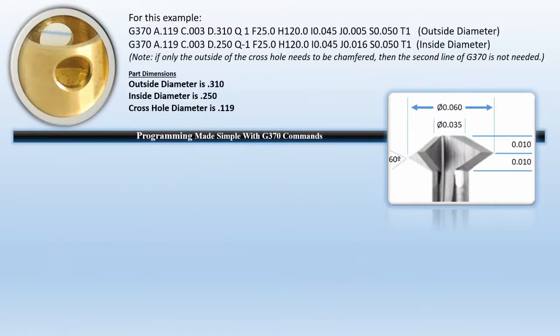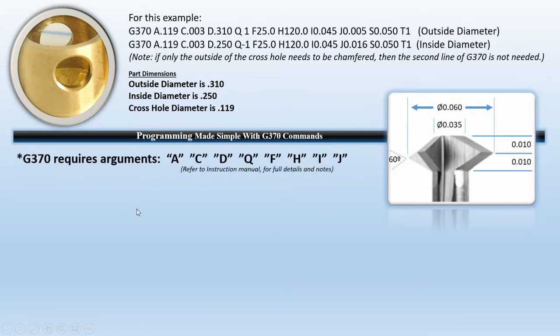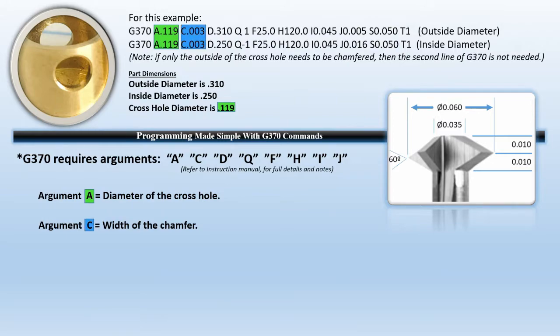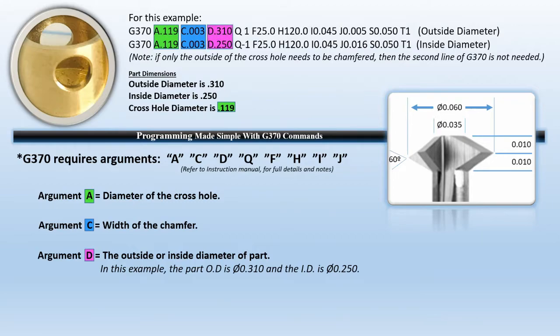As you can see from this command format, G370 is followed by numerous arguments: A, C, D, Q, F, and so on. In this example, the required arguments for G370 are A, C, D, Q, F, H, I, and J. Argument A is the diameter of the cross hole—in this case .119. Argument C is the width of the chamfer: how much chamfer do you want in the hole, three thou, one thou, five thou. Argument D designates outside or inside diameter of part, so .310 outside, .250 inside.